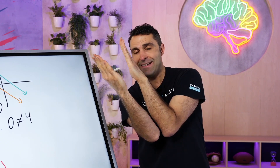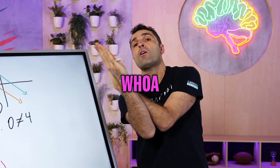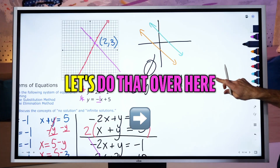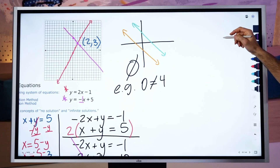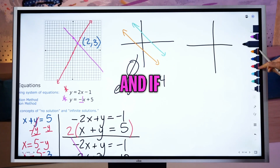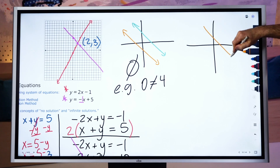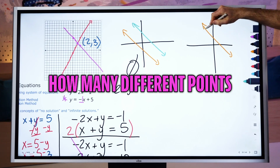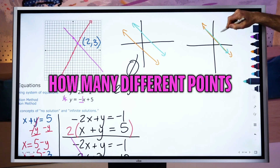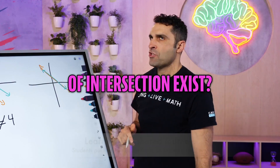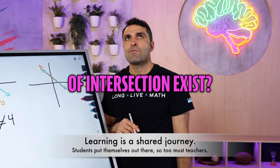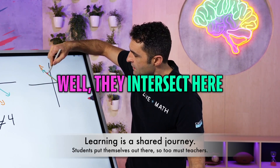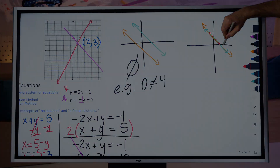Oh, maybe you're reading my mind. If the lines are overlapping — let's do that over here — if the lines are overlapping, the fun question is: how many different points of intersection exist? While they intersect here and here and here and here and here.